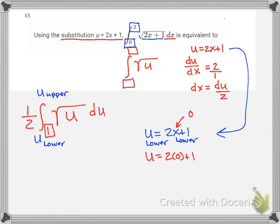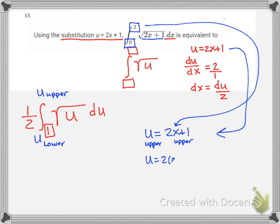To find the upper limit, I'll use that same u substitution. Now we're looking for the upper, and we're going to use the upper limit of integration for the x. So this 2 is now going to fill in that x, and we're going to have u equals 2 times 2 is 4 plus 1 is 5. So my upper u is equal to 5.